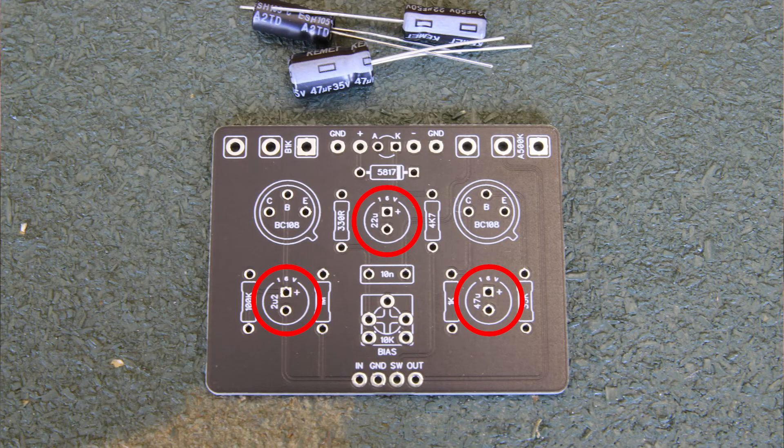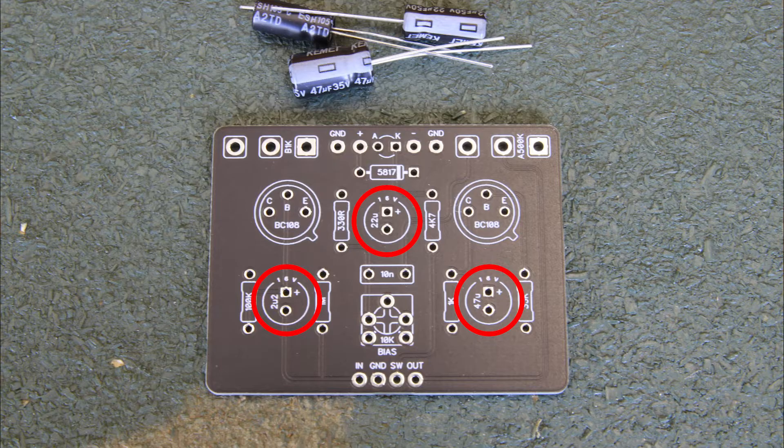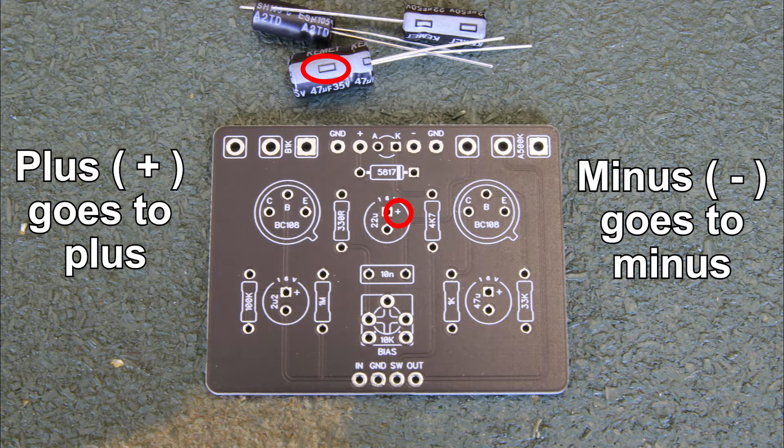Now find the electrolytic capacitors. These parts have polarity. The PCB marks the plus side and the capacitors mark the negative side. Plus goes to plus, minus goes to minus.